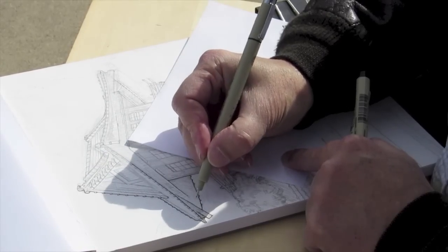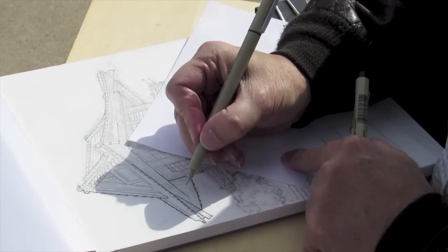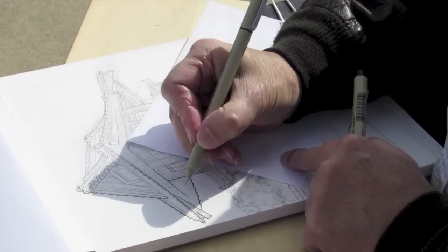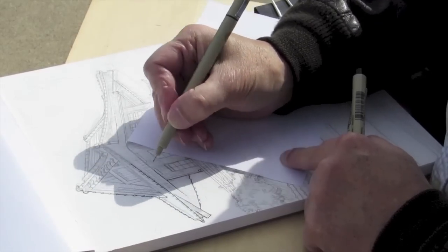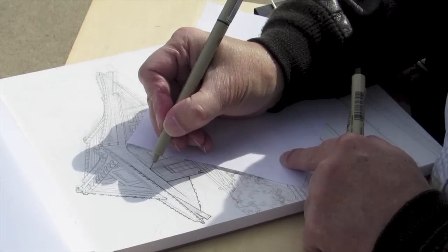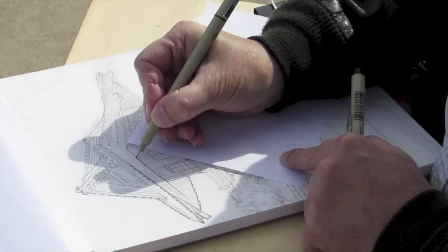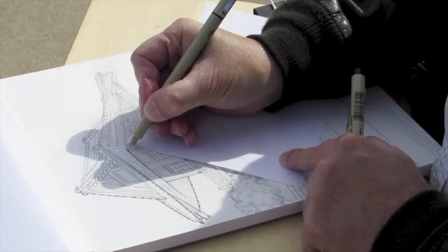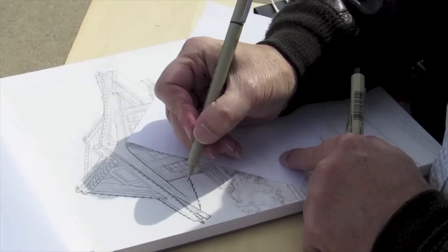Some of these edges actually will disappear into shadow, as you'll see once we start bringing in the tone. So rather than draw something in that I believe to be there, I'm drawing the underside of one of the beams right now.